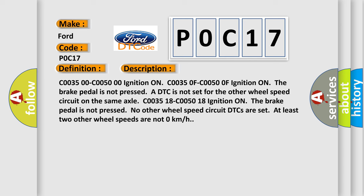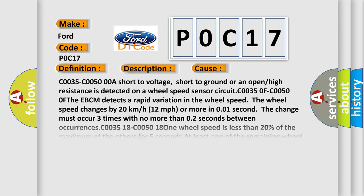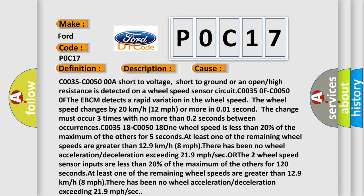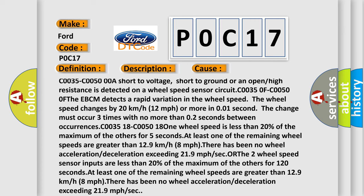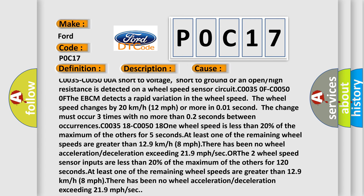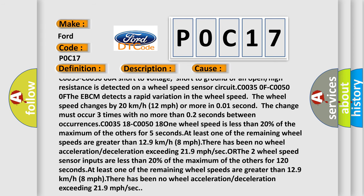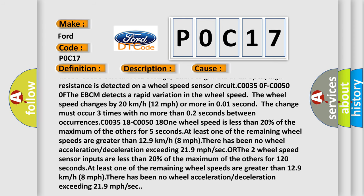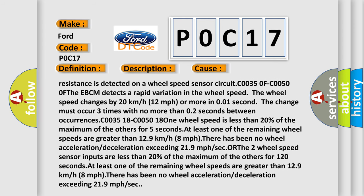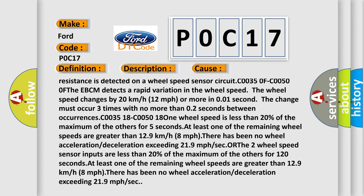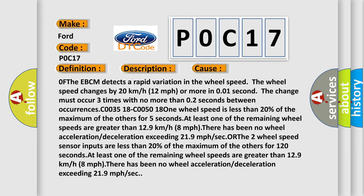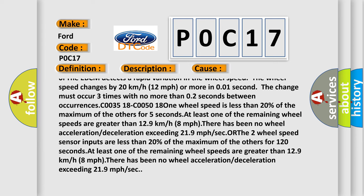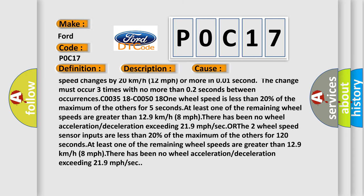This diagnostic error occurs most often in these cases. For C0035/C00500: a short to voltage, short to ground, or an open or high resistance is detected on a wheel speed sensor circuit. For C00350F/C00500F: the EBCM detects a rapid variation in wheel speed — the wheel speed changes by 20 km/h (12 mph) or more in 0.01 seconds, and the change must occur three times with no more than 0.2 seconds between occurrences.